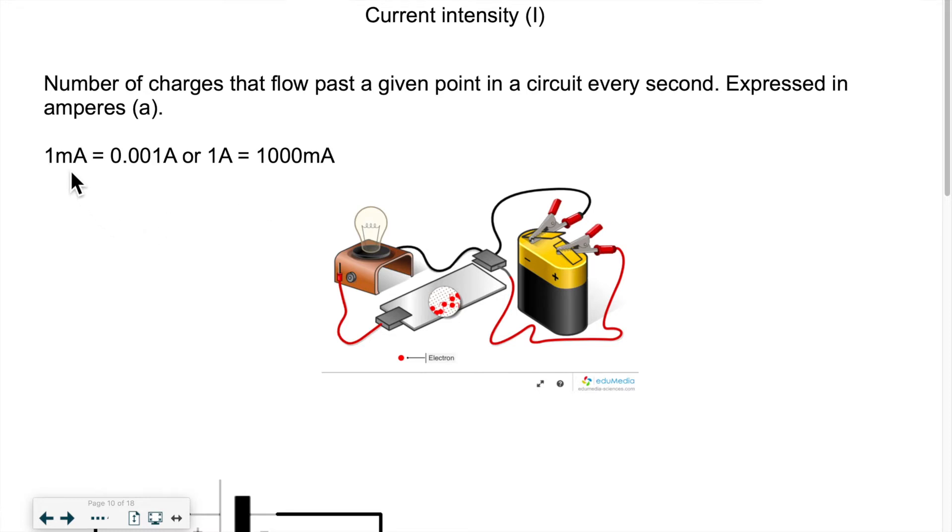Or in one amp, I have 0.001 amp. This can be useful when we do calculations for a circuit and the quantities are very small. We're going to need to remember this conversion.